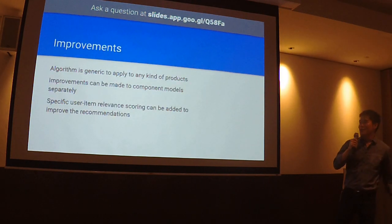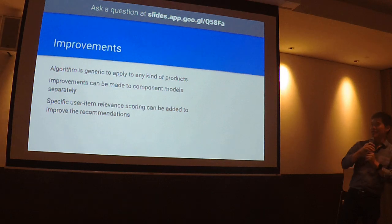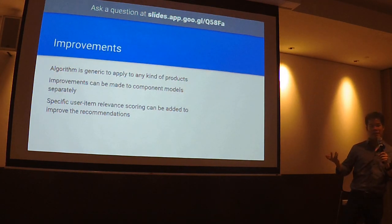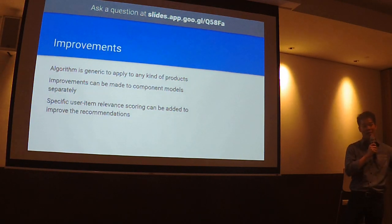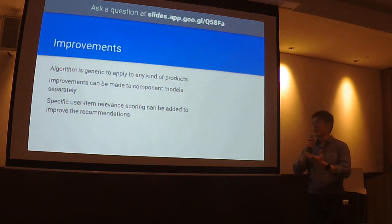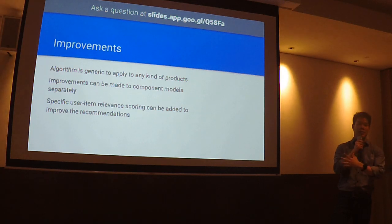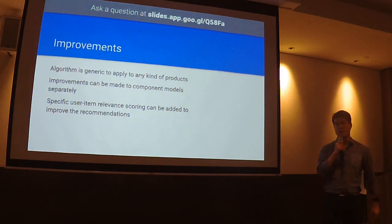So, possible improvements. If you think about all the things I've gone through, this is actually an engineering algorithm that can be applied to any kind of product as long as we have the interaction log. So it's not very specific to all kinds of products. There are possible improvements that can be made. The benefit of this is that because of how the algorithm is actually broken down into components, they can actually be improved separately from each other.